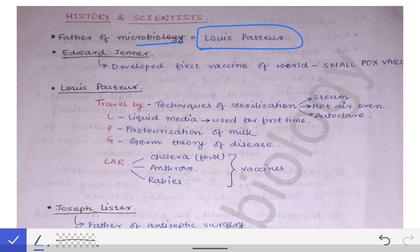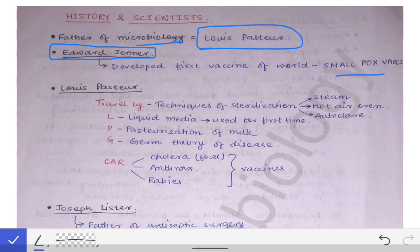The second scientist we are concerned with is Edward Jenner. Edward Jenner is famous in the microbiological field because he was the first to develop a vaccine in the world. The first vaccine was developed by Edward Jenner and it was against the smallpox virus — the smallpox vaccine — and with the help of that vaccine we were able to eradicate smallpox in the 1980s. This was a great achievement. With the development of this vaccine we were able to develop further vaccines and save lives.